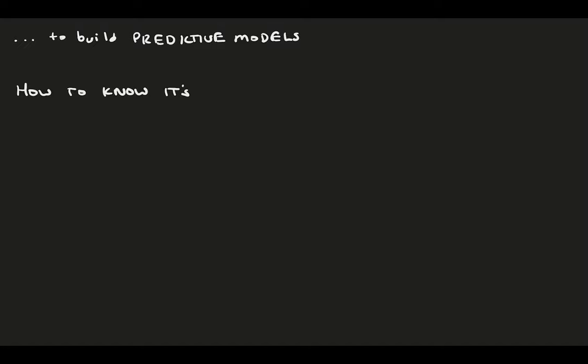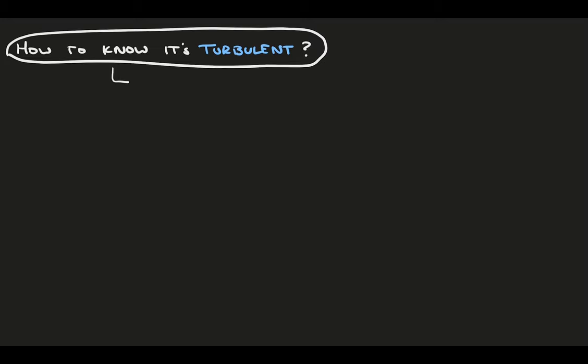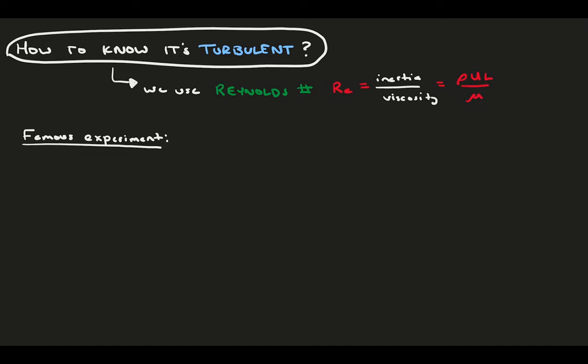How do we know if our flow is turbulent in the first place? To know this, we usually use the Reynolds number, one of our favorite and most popular non-dimensional numbers. The Reynolds number is a non-dimensional number that compares the inertia of our flow to the viscous forcing. This number got its name from the studies of Osborne Reynolds, who pioneered turbulence research.